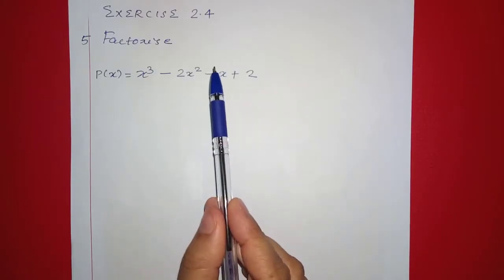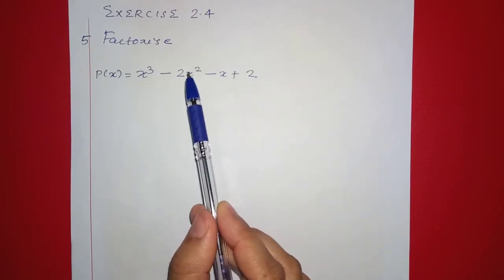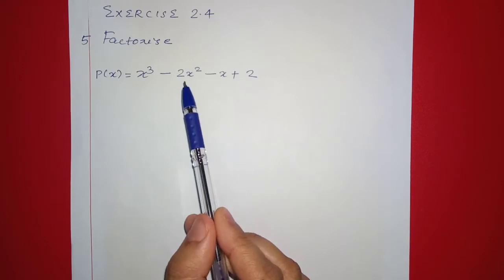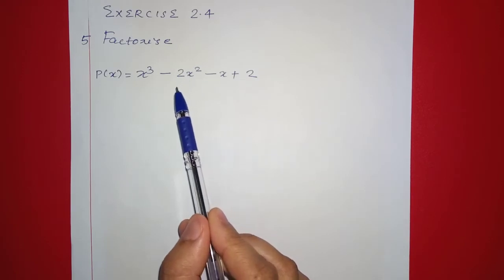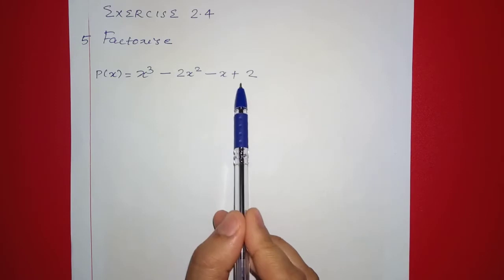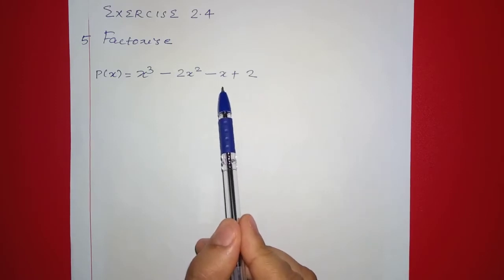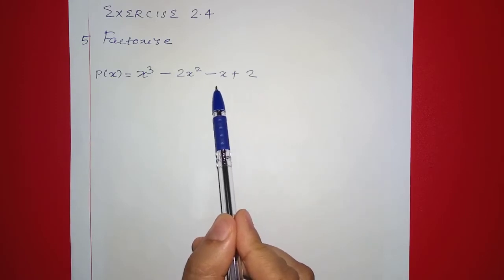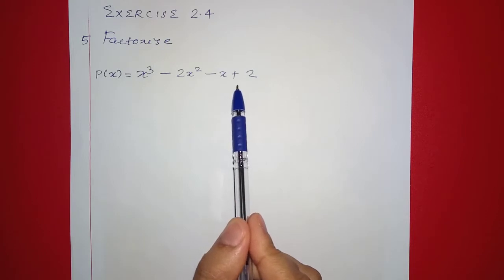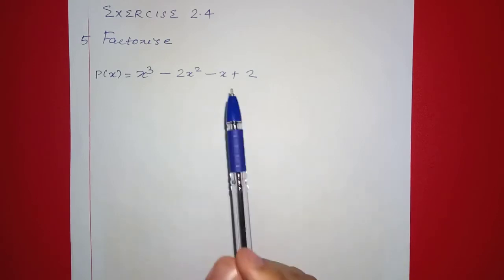We will do the fourth question in exercise 2.4. We will factorize the first one. P of x is equal to x raised to 3 minus 2x square minus x plus 2. We will factorize the degree 2 polynomial and the degree 3 polynomial.